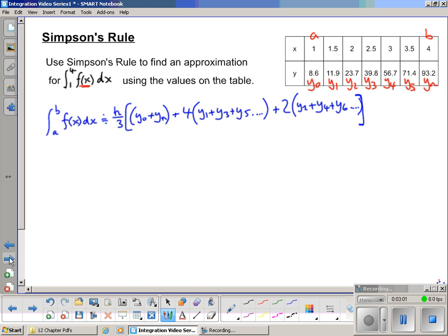Now our h, I'll do our h up here. h equals b minus a divided by n, which is the number of strips. Now to find the number of strips from a table, we will figure out how many function values we have. So we have 1, 2, 3, 4, 5, 6, 7 function values. So if we have 7 function values, we know there will be 6 strips, because as we know from a previous video, there's always one more function value than there are strips. So for our b minus a here, we'll take our 4 minus our 1 divided by how many strips we get. So we have 3 over 6 or a half.